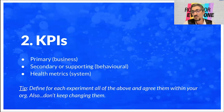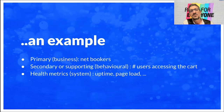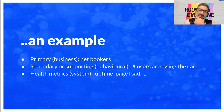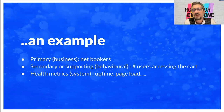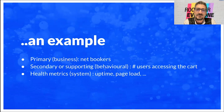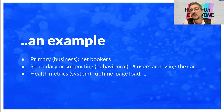This will make your strategy much, much stronger. For example, in the case of the cart: the primary business metric would be net bookers. The secondary or supporting metric is the number of users accessing the cart — a behavioral metric. And the health metrics, in this case, are system metrics: uptime and page load.